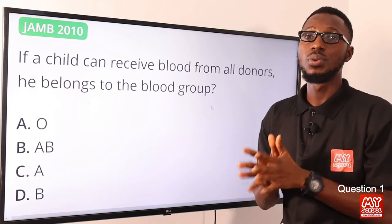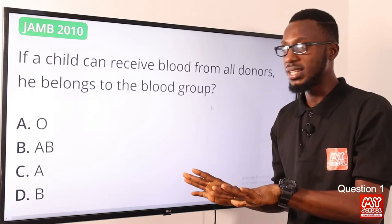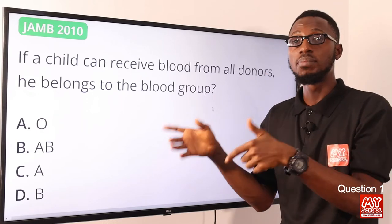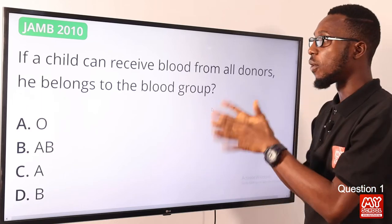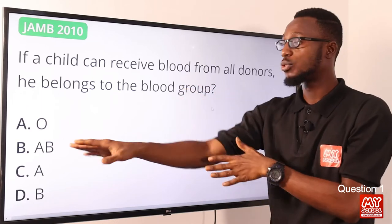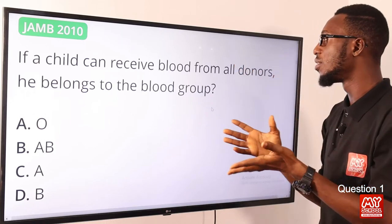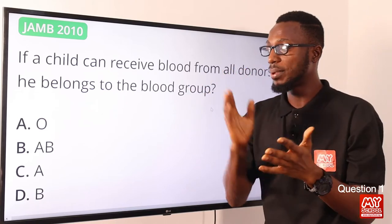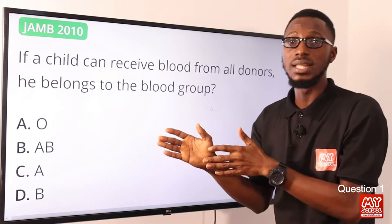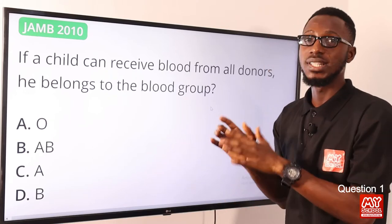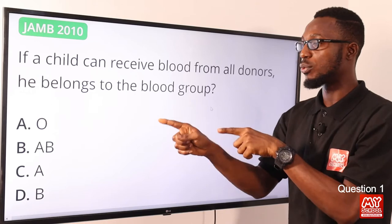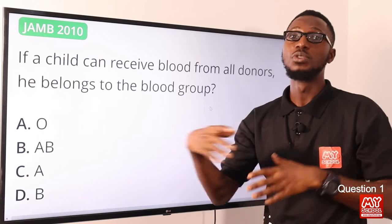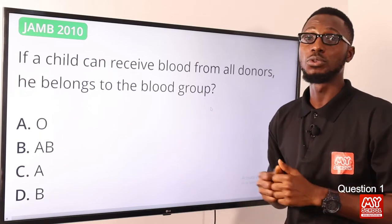When we talk about blood groups, we are talking about the antigens and antibodies present. On blood group A, the surface of the red blood cell has antigen A, then antibody B in the plasma. Blood group AB can receive from all blood groups — from A, B, O, and AB itself — because there are no antibodies present in the plasma of blood group AB. So AB is the universal acceptor, and group O is the universal donor. The correct option is option B, blood group AB.